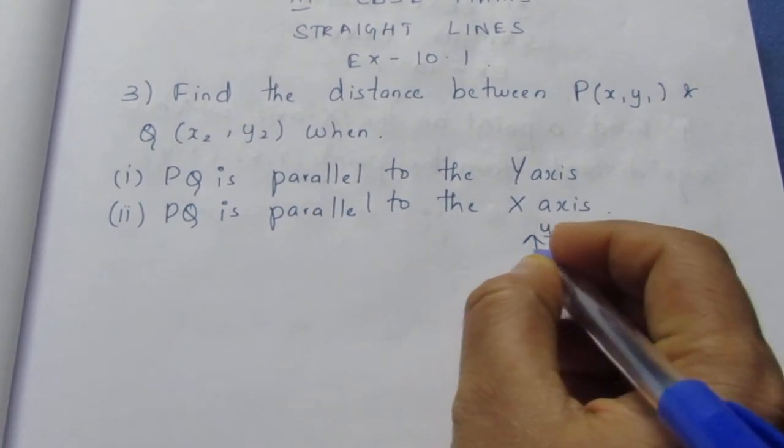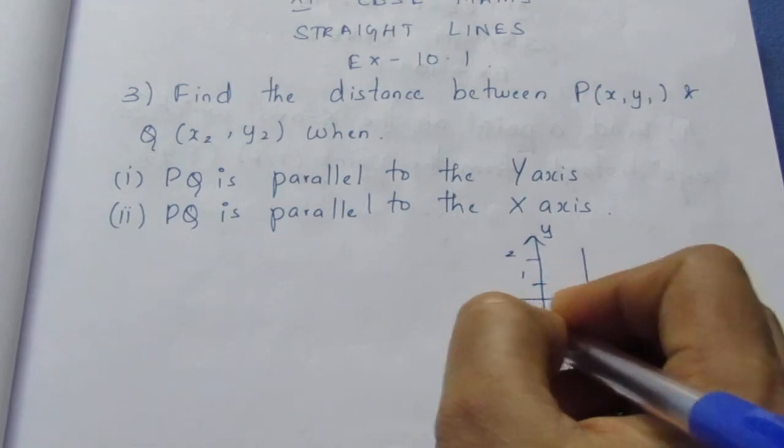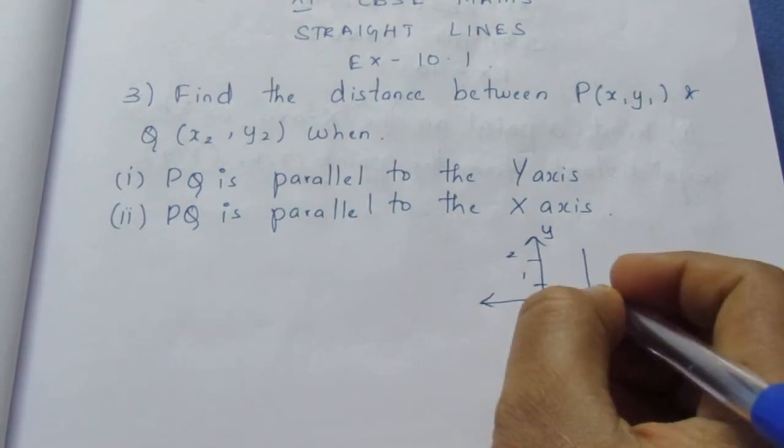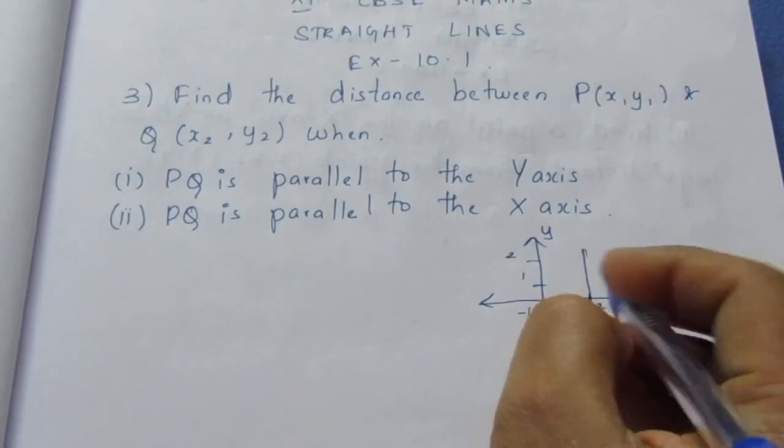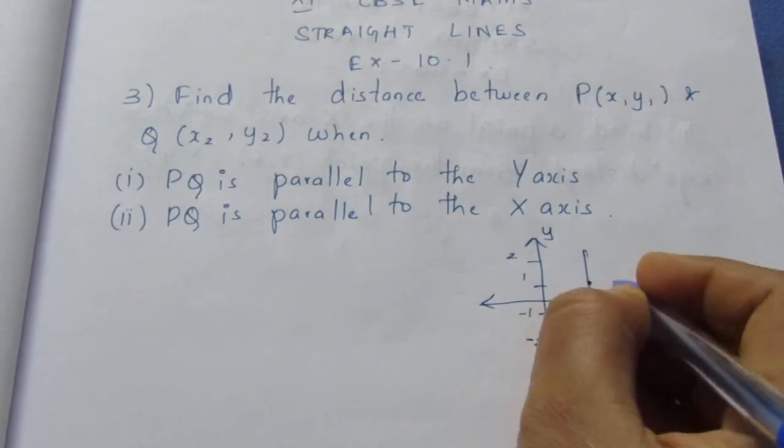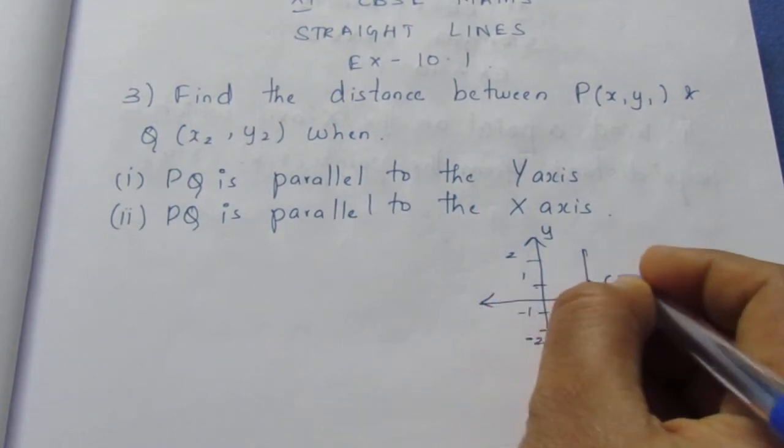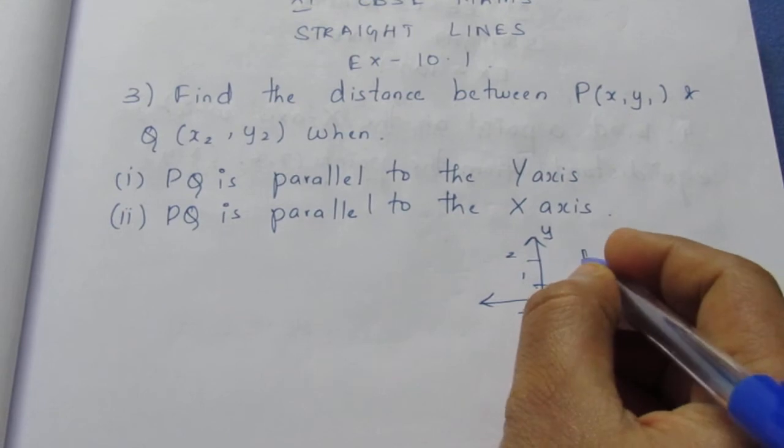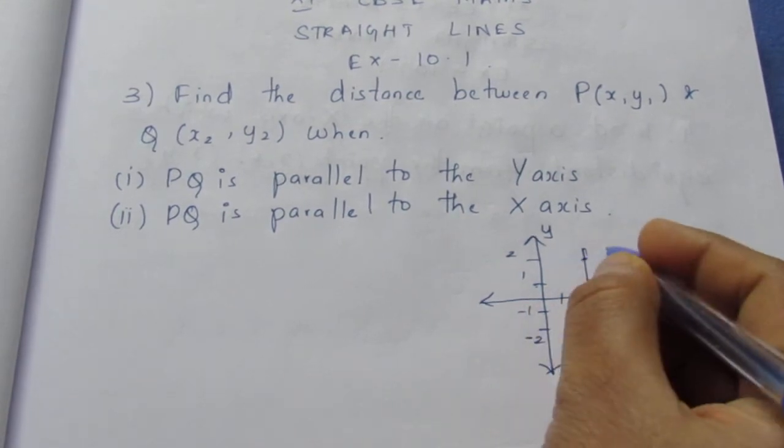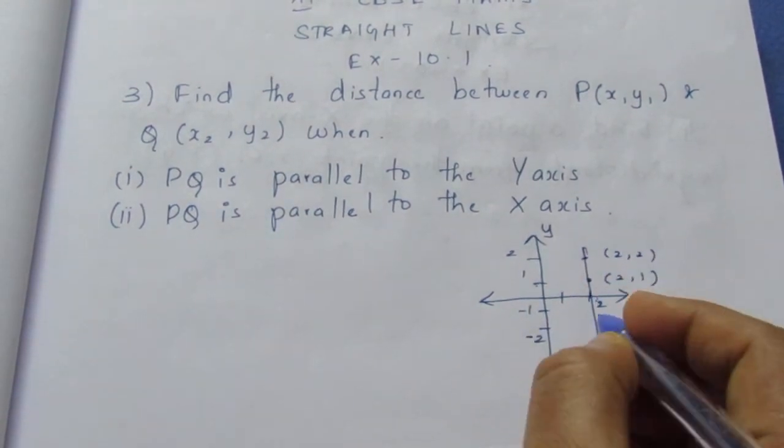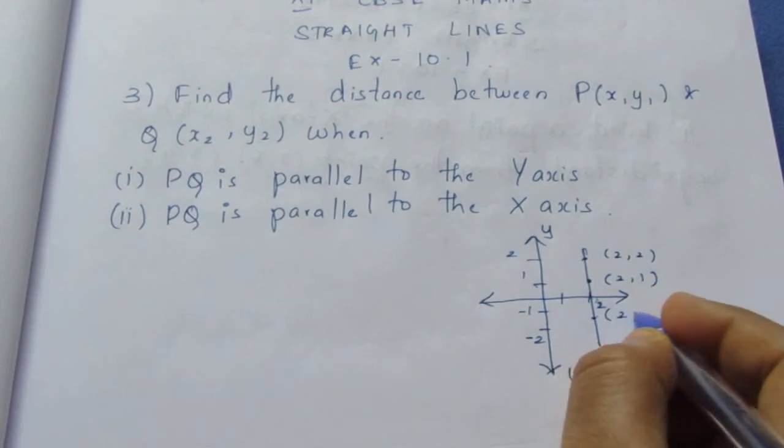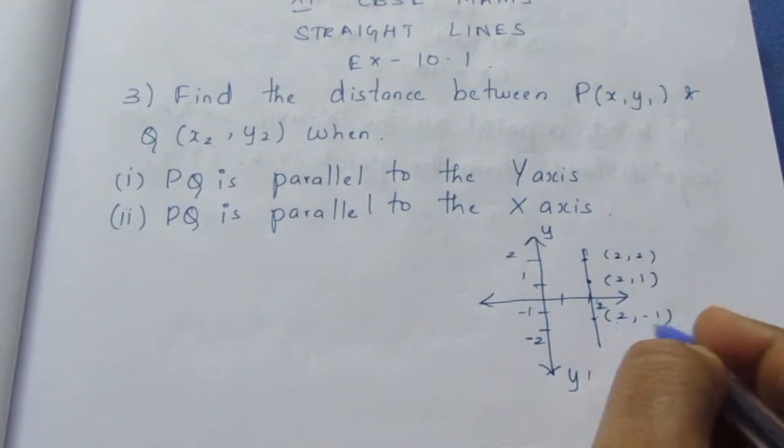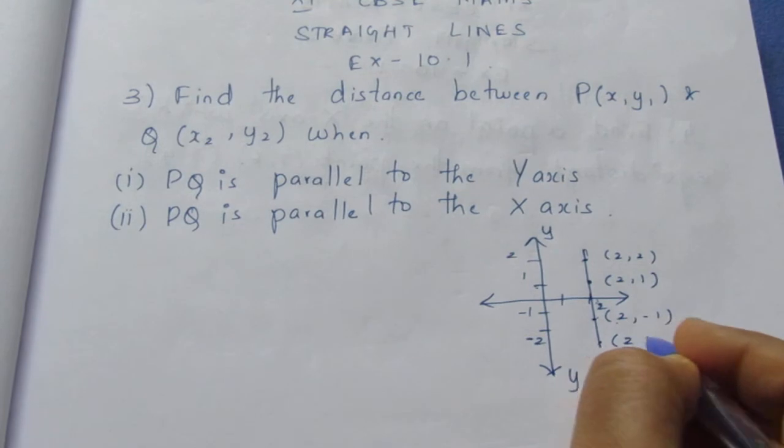Here 1, 2. Here minus 1, minus 2. To plot this point, to connect this line, what will be the plotting? It will be (2, 1). Then here it will be (2, 2). Here (2, -1). Because first X axis then the Y axis here (2, -2).